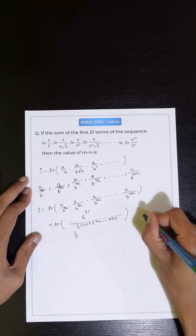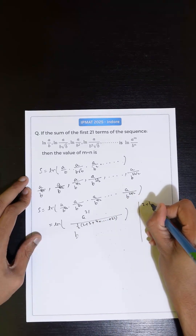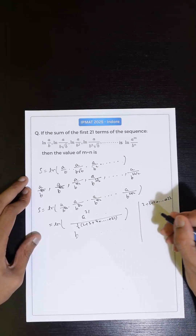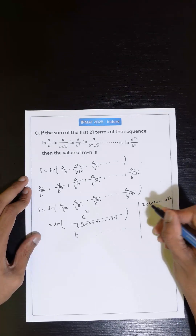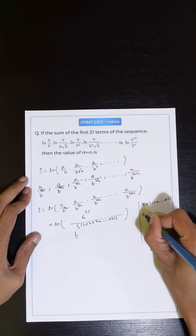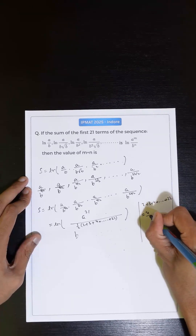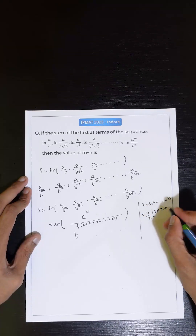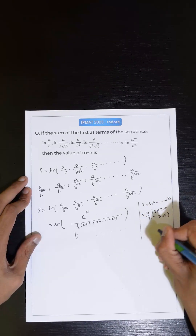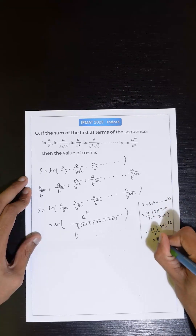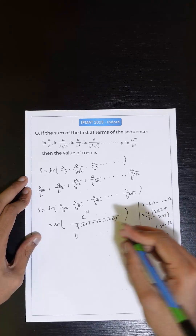Now, 2 + 3 + 4 up to 22 — we have 21 terms. It is an AP where a = 2, common difference = 1, and n = 21 terms. Using the formula: sum = n/2 × (2a + (n−1)d) = 21/2 × (4 + 20) = 21/2 × 24 = 21 × 12.